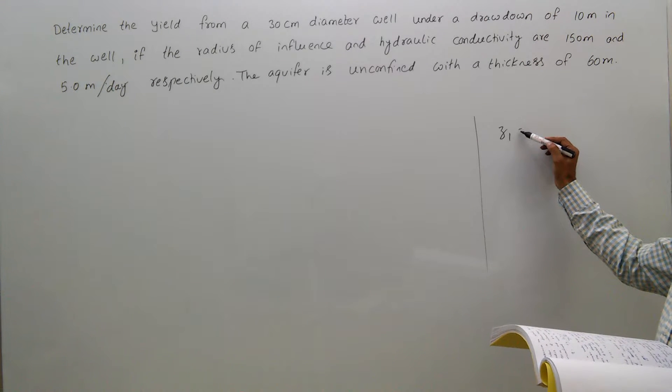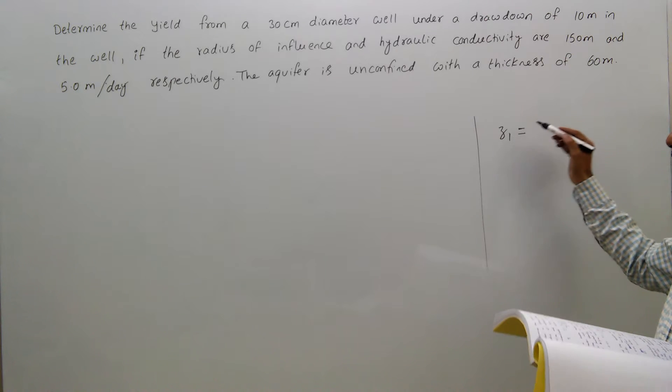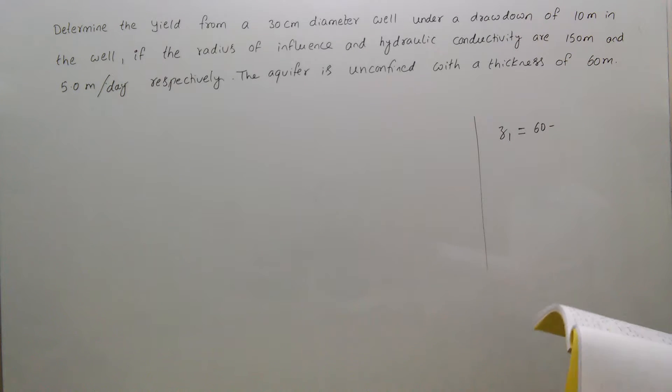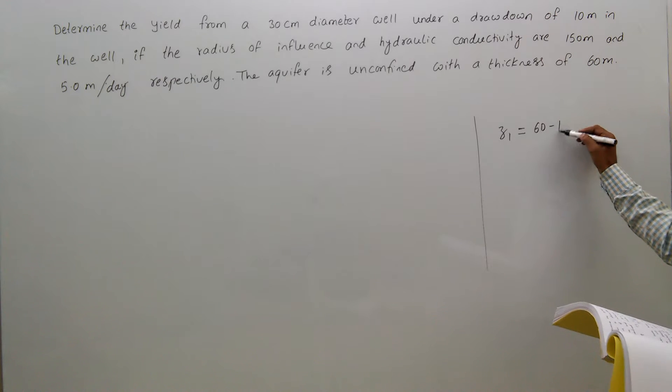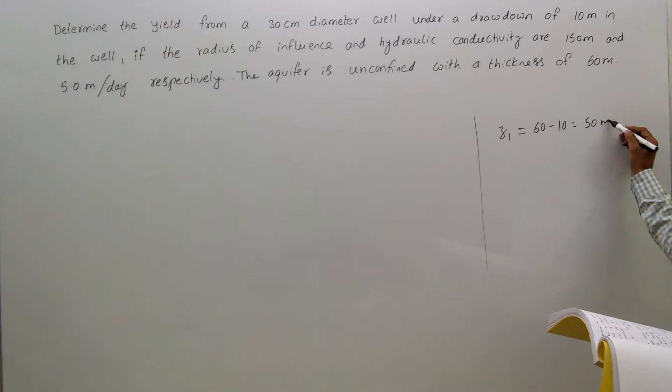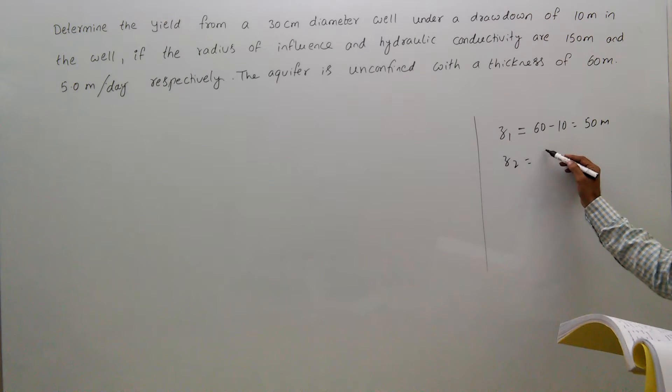z1 equals 60 minus the drawdown of 10 meters, that is 50 meters. z2 equals 60 meters itself.